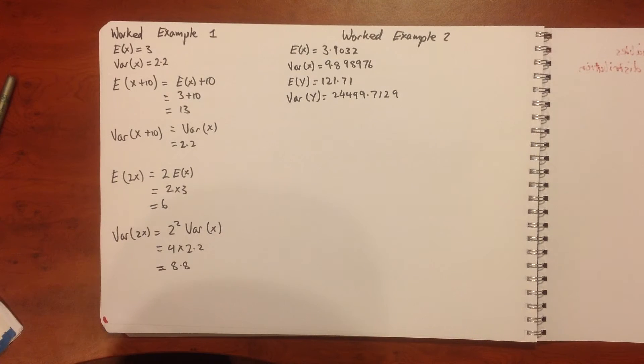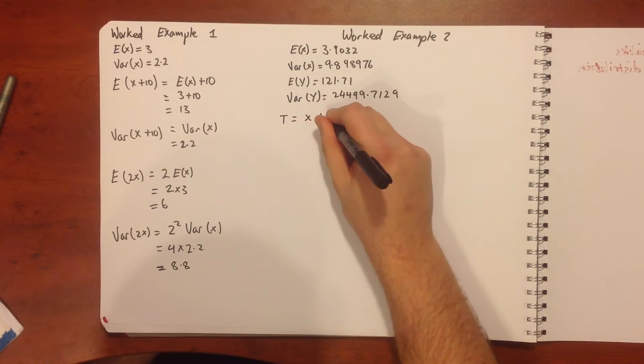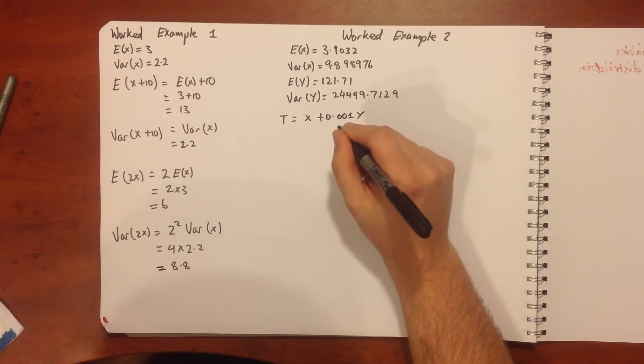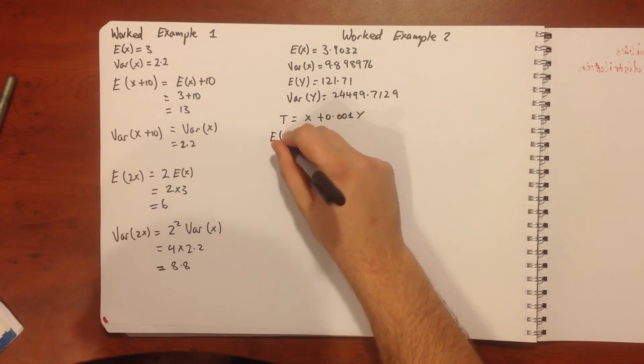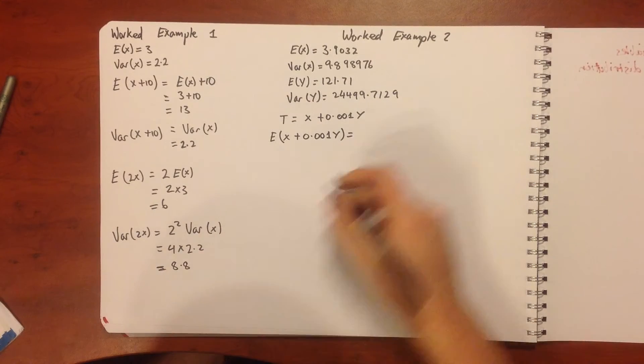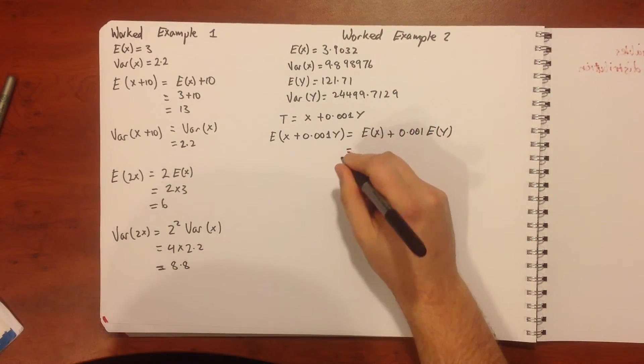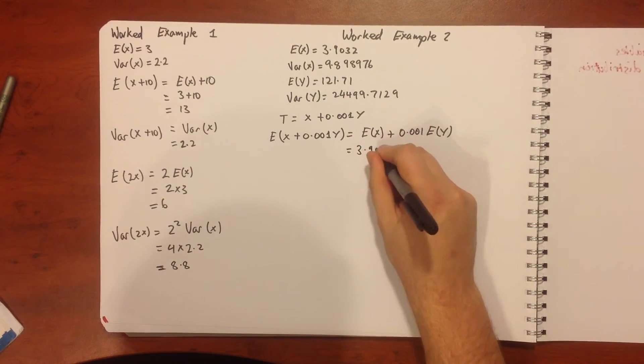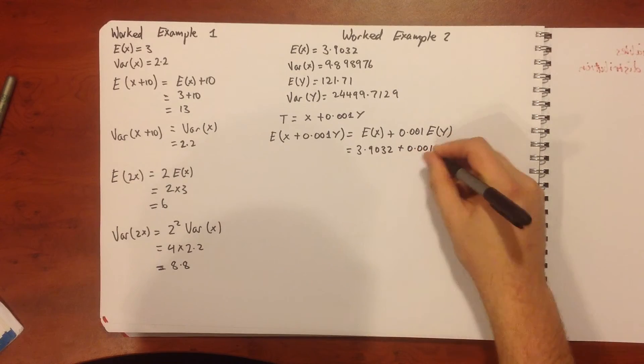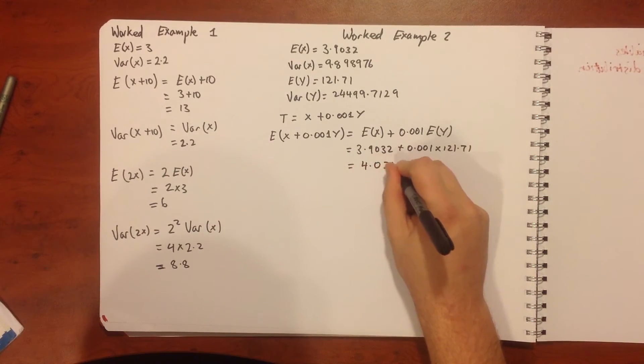We're asked to find what the expected value and variance of t would be, where t is equal to x plus 0.001y. We want the E of x plus 0.001y, which is going to equal our E of x plus 0.001 times the E of y. That means E of x is 3.9032 plus 0.001 times 121.71. When we do that we get a value of 4.02491.